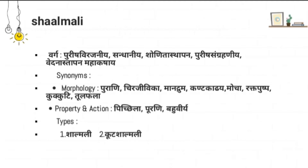Regarding Vargas, the Mahakashaya under which Charaka mentions Shalmali are: Purisha Virajaniya — one which gives normal color to stool; Santhaniyaya — which unites torn or broken bones; Shonita Stapana — one which does stambhana of blood; Purisha Sangrahaniya — one which does proper collection or deposition of mala; and Vedana Stapana Mahakashaya — one which subsides pain.